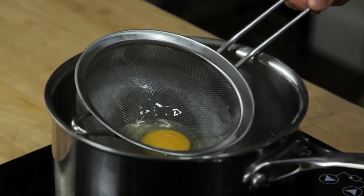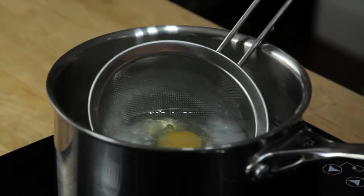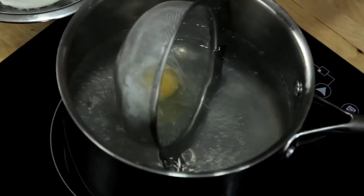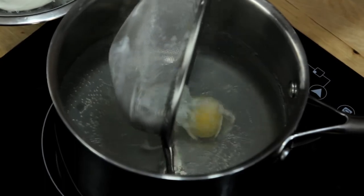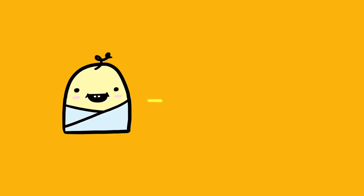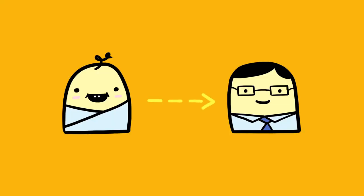All I'm going to do is gently lower the strainer with the egg into the water, move it back and forth a little bit to make sure the egg isn't stuck, and then carefully roll the egg out. Just like a kid, it's these early formative stages of a poached egg's life that are going to determine how it turns out in the end.